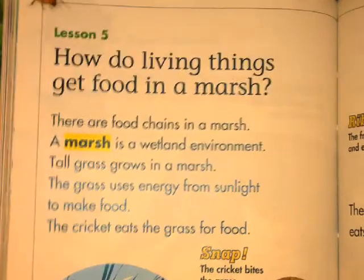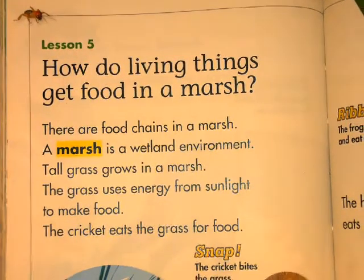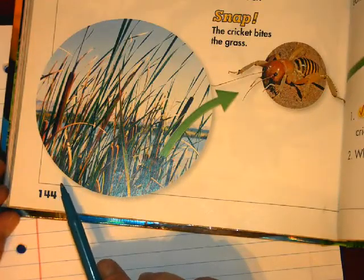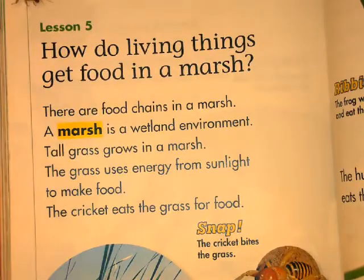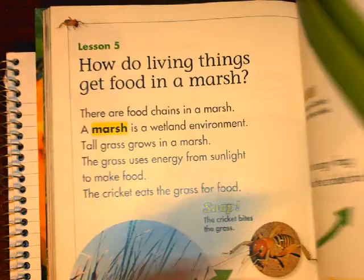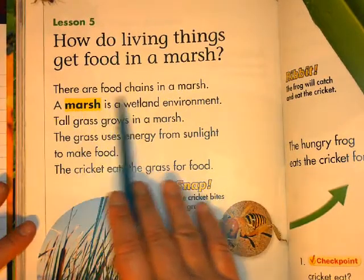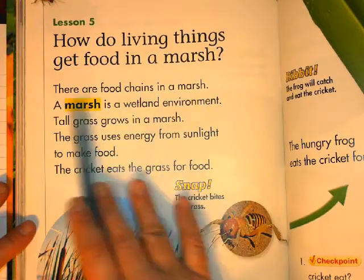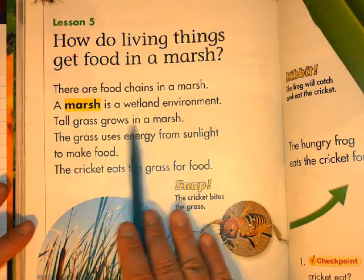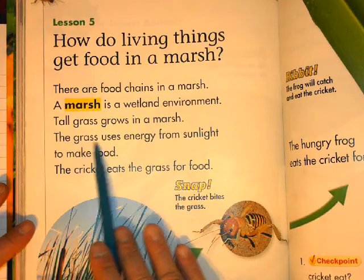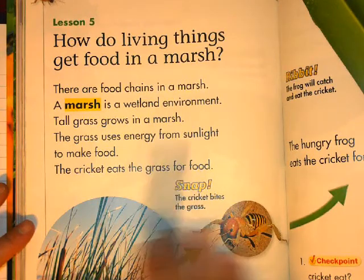Okay, last week we were talking about food chains. So lesson 5 is on page 144: How do living things get food in a marsh? There are food chains in a marsh. A marsh is a wetland environment. Tall grass grows in a marsh. The grass uses energy from sunlight to make food.